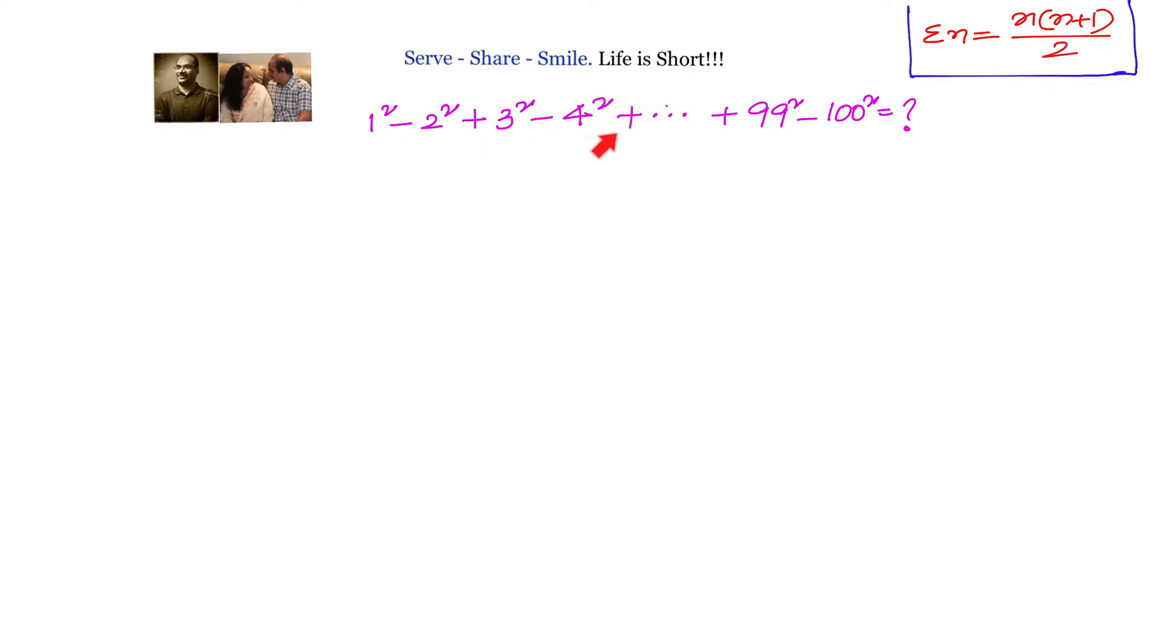1 square minus 2 square plus 3 square minus 4 square plus up to 99 square minus 100 square. We have to find out the value of this. Now we can solve this problem in more than one method.